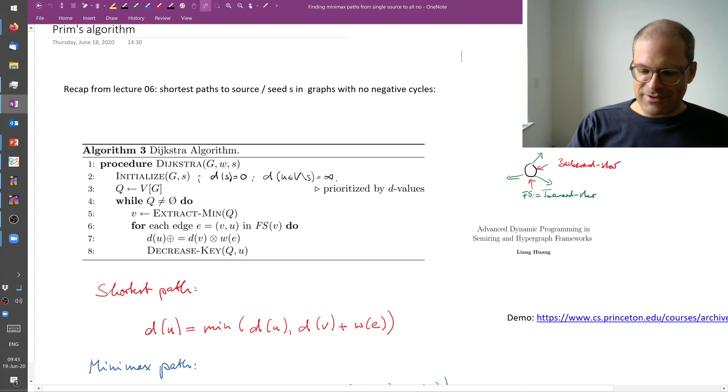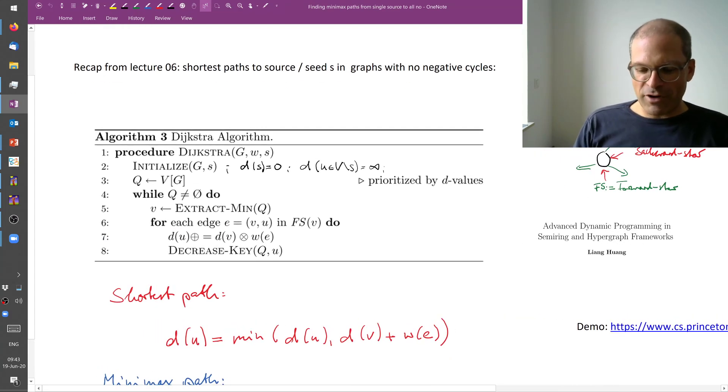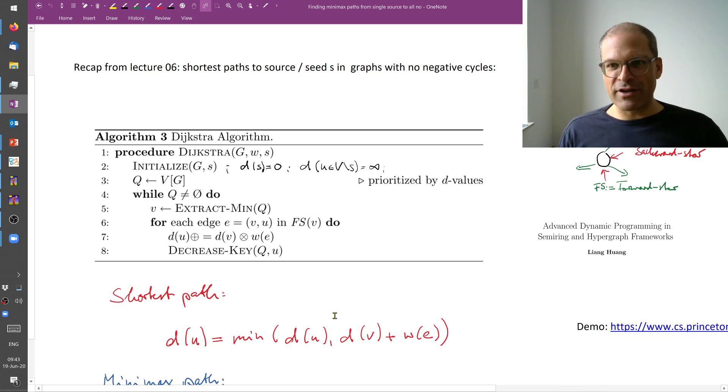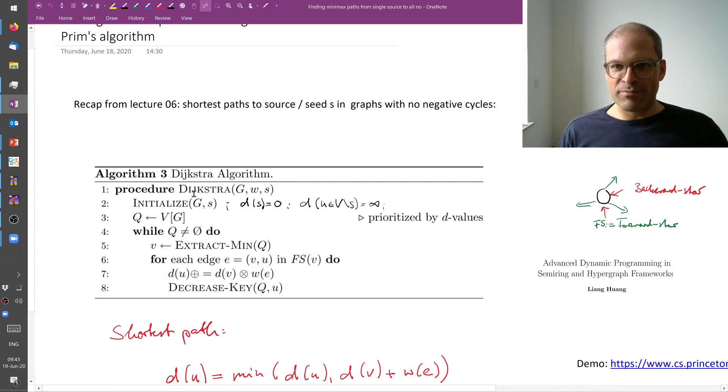You've seen this bit of pseudocode before when we were discussing shortest path in lecture 6. Let's briefly go through this again. We have some graph, we have some source s and we have distances to s.